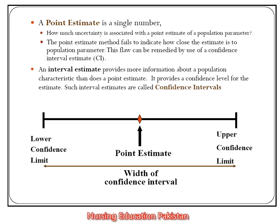The point estimate method fails to indicate how close the estimate is to the population parameter. Our sample results do not always match the population parameter exactly. This is why we use the confidence interval, which we call an interval estimate.